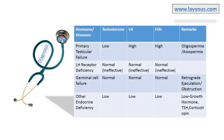Measurement of these hormones — LH, FSH, prolactin, and testosterone — will help in the diagnosis. For example, primary testicular failure is associated with low testosterone level and high LH and FSH. This syndrome is associated with either low sperm count (oligospermia) or complete absence of sperm (azoospermia). In cases of retrograde ejaculation, obstruction in ejaculatory ducts, or germinal cell failure, there will be normal levels of testosterone, LH and FSH.